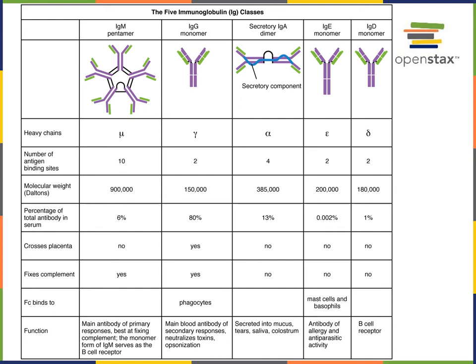The pentamer form of IgM is the primary form of IgM secreted by plasma cells. The pentamer has 10 antigen binding sites, enabling the IgM pentamer to be very good at creating clumps of antigen in a mechanism known as agglutination. IgM pentamers are also very good at activating the complement system.